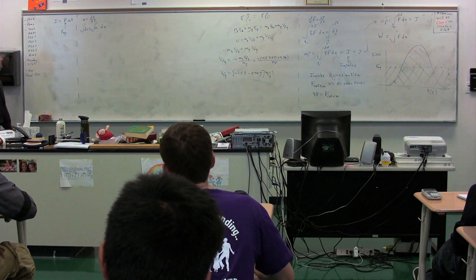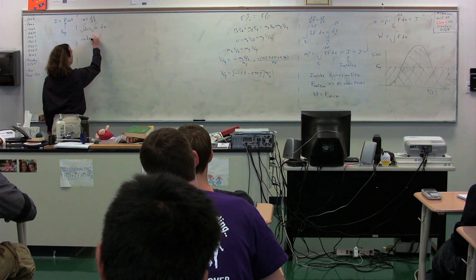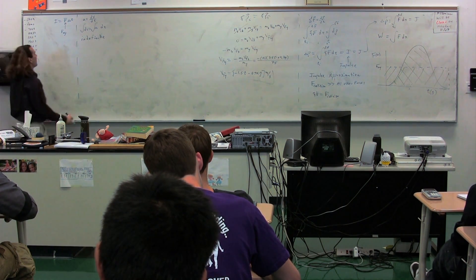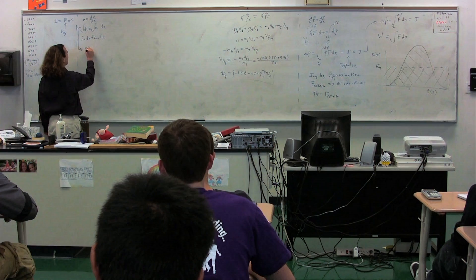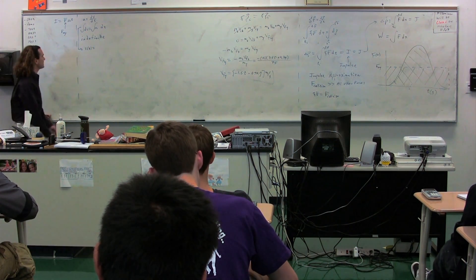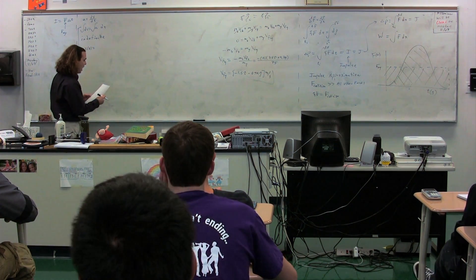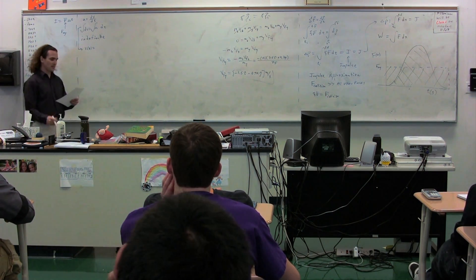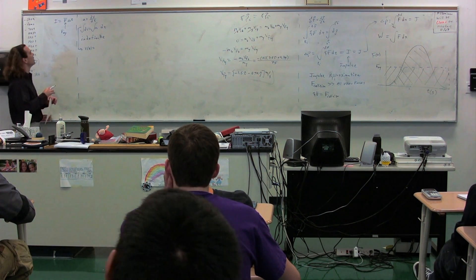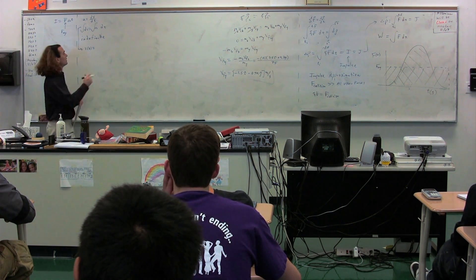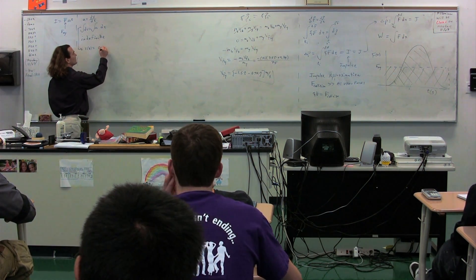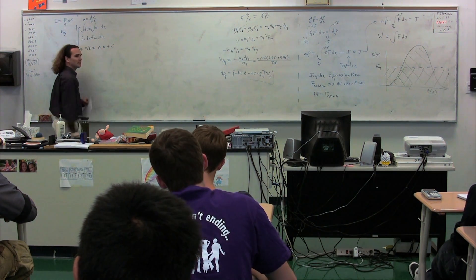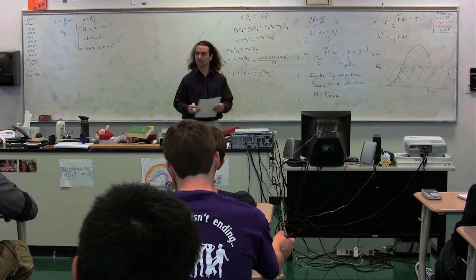If we're doing an indefinite integral — that is, without limits — on the left-hand side we're going to have the velocity as a function of time, and on the right-hand side we're going to take the integral of acceleration as a function of time. If we take the integral of acceleration as a function of time, we're going to get acceleration times t, because this is t to the zero power, plus c, where c is an unknown.